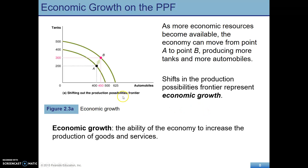Economic growth and the PPF. Inside the curve is inefficient, outside is unattainable given current technology and resources. But if we have economic growth, that extends the PPF outward — going from A to B. Now things that were previously unattainable become attainable because of economic growth, which is just an increased production of goods and services. So a shift outward of the PPF represents economic growth.